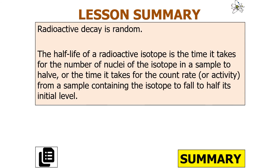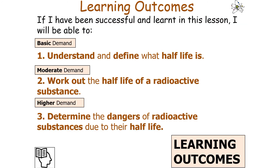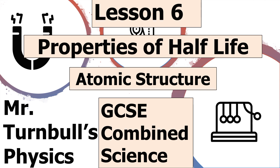Radioactive decay is random, and the half-life of a radioactive isotope is the time it takes for the number of nuclei of the isotope in a sample to halve, or the time it takes for the count rate or activity from a sample containing the isotope to fall to half its initial level. You should be able to explain the concept of half-life, how it relates to the random nature of radioactive decay, and determine the half-life of a radioactive isotope from given information. In today's lesson we should now be able to understand and define what half-life is, work out the half-life of a radioactive substance, and determine the dangers of radioactive substances due to their half-life.